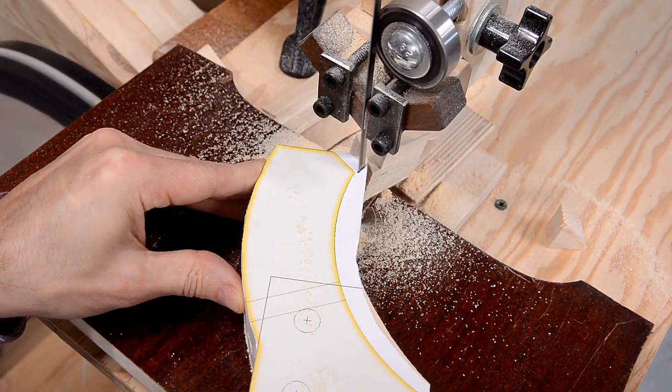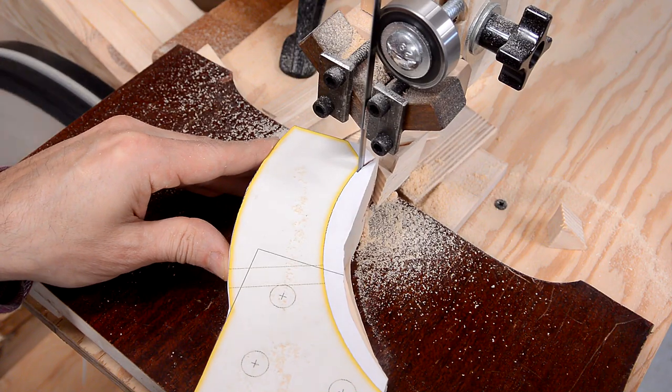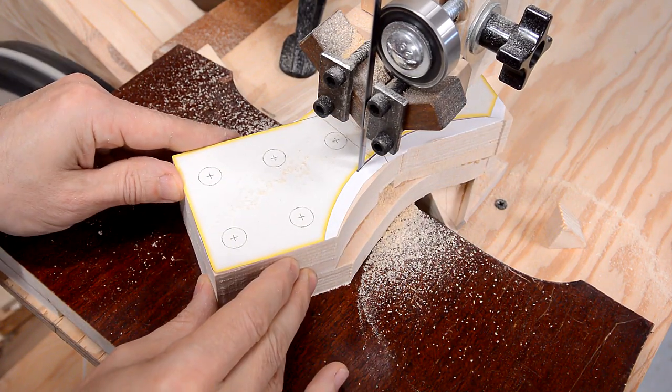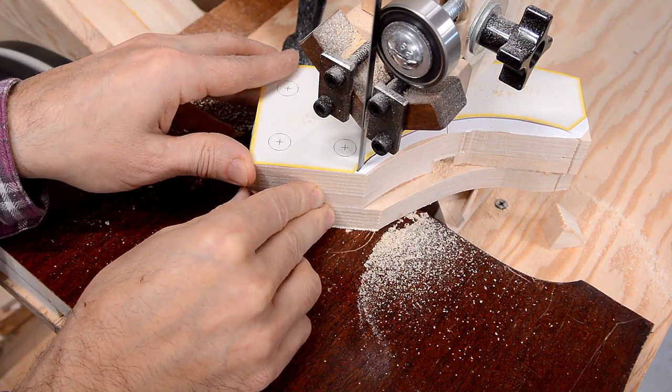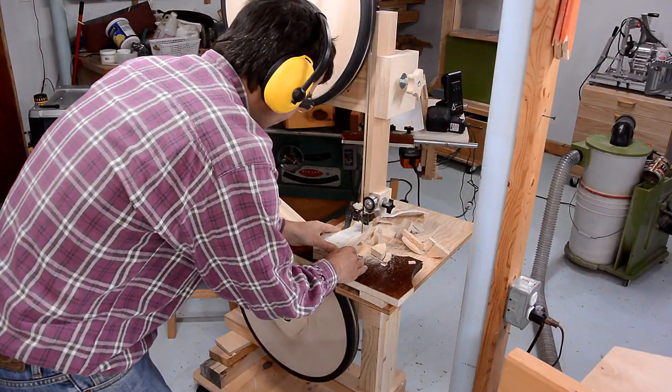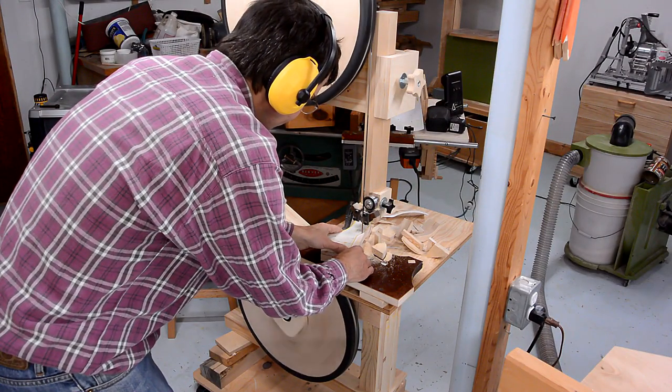The inside of this trunnion is the most critical for accuracy, so I'm cutting that very carefully. I think I'd be more nervous if this bandsaw wasn't running so slow.